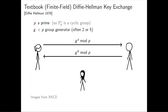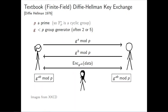Alice chooses a secret A and sends G to the A mod P, which will be a group element, as her public value. Similarly, Bob chooses B and sends G to the B mod P as his value. Then they can each compute G to the AB mod P as their shared secret, from which they derive session keys and can start encrypting data. Poor Eve sees all this communication but has no way to determine the session key without computing the discrete log of one of these values.